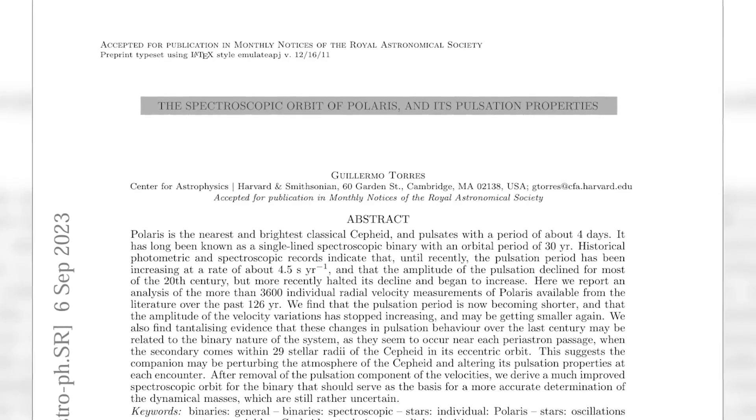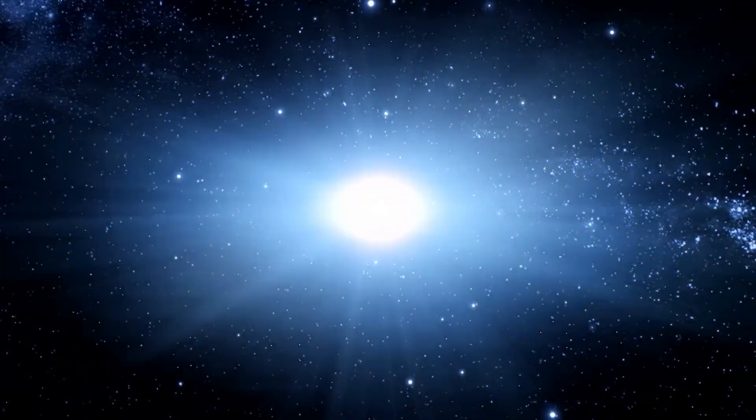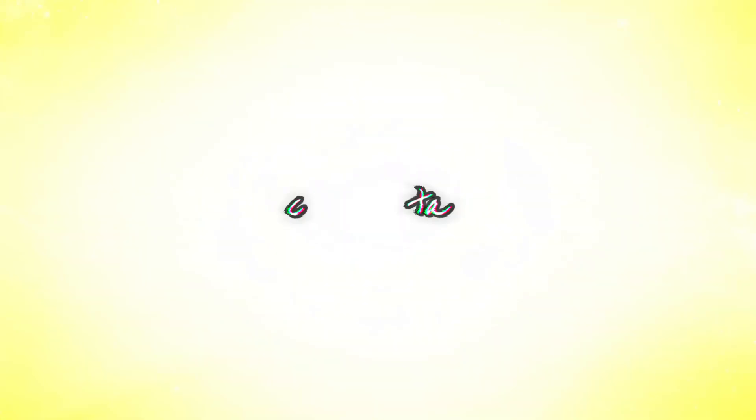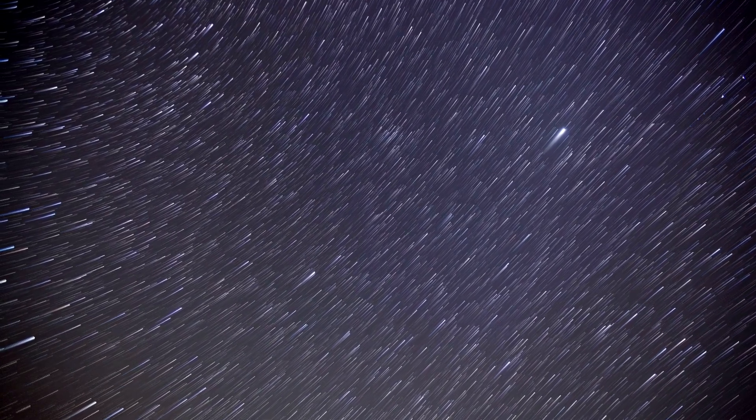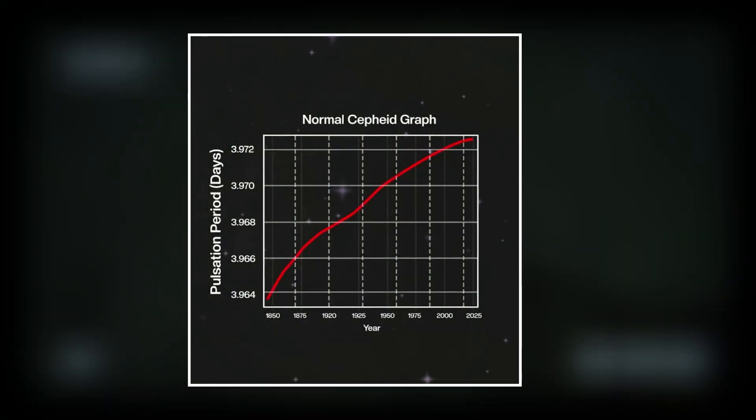The paper suggested that our pole star, Polaris, is about to explode. Actually, our pole star is a Cepheid star, which implies that it releases radiation at regular intervals. However, the time required to emit Cepheid star radiation is extremely predictable. Therefore, the graph looks like this.